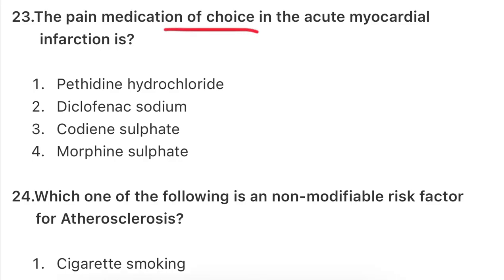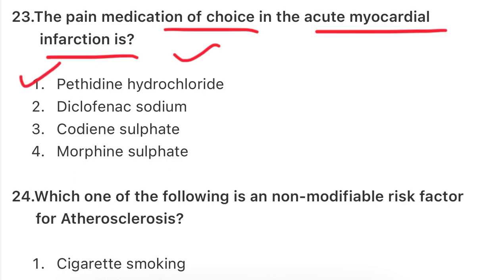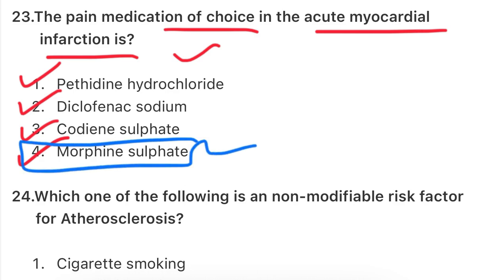Very important question: what is the pain medication of choice in acute myocardial infarction? In myocardial infarction, the myocardial muscle - the main muscle of the heart that helps in pumping blood - is not receiving proper oxygen and blood supply. The options are: pethidine hydrochloride, diclofenac, codeine sulfate, or morphine sulfate. The answer is morphine sulfate, which is used as an analgesic in acute MI.